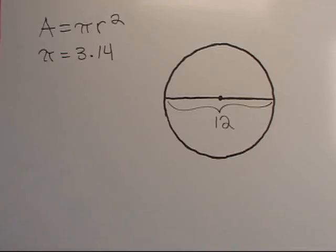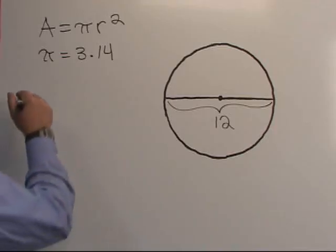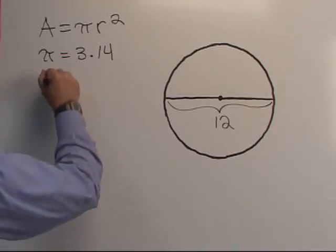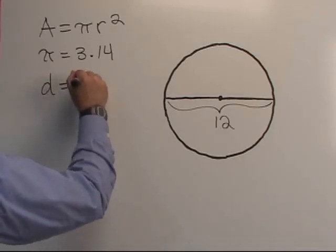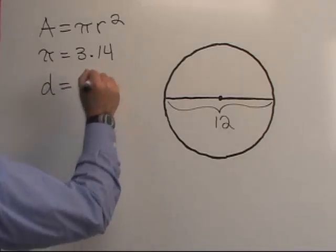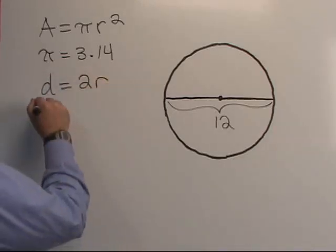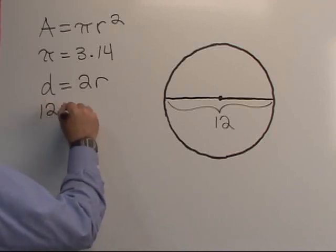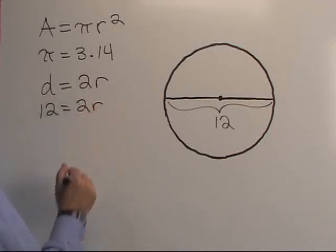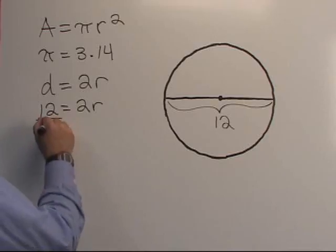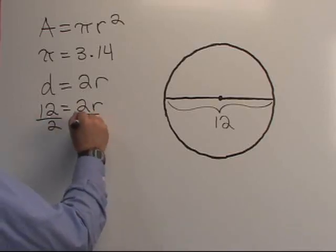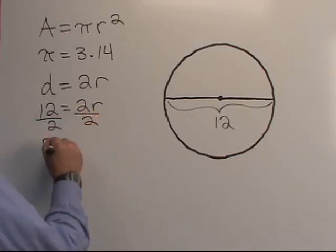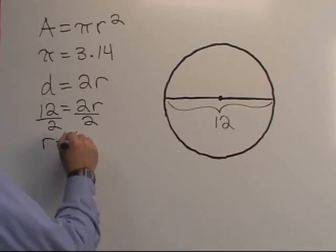We know that the diameter of a circle is equal to 2 times the radius. So 12 equals 2r, and if we divide by 2, we get r equals 6.